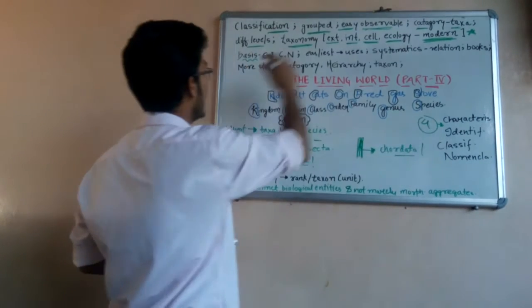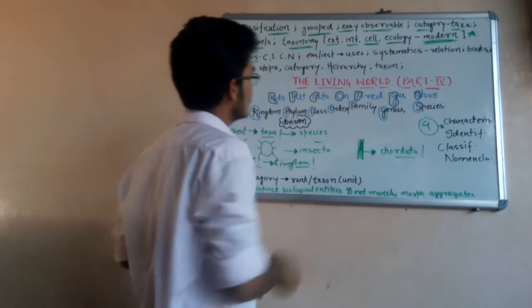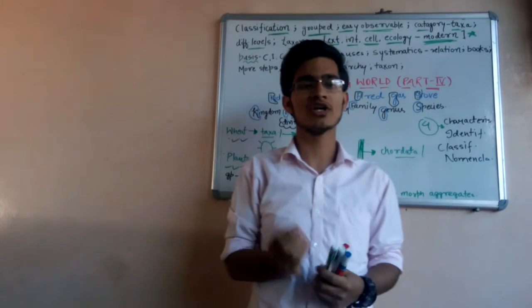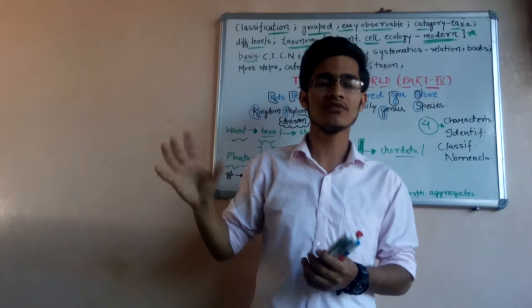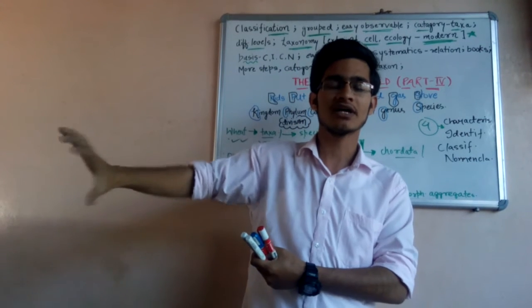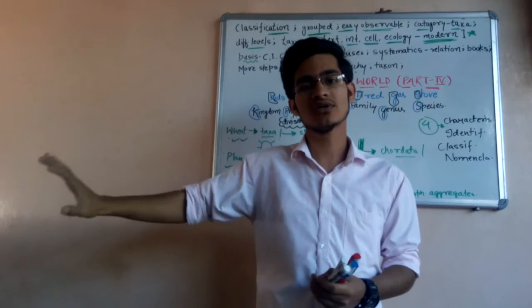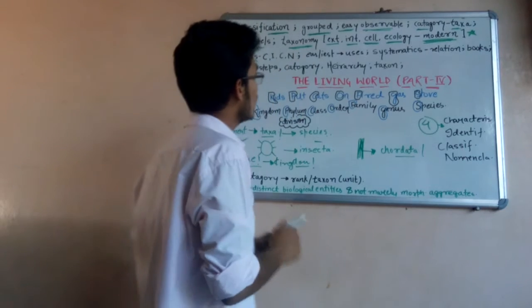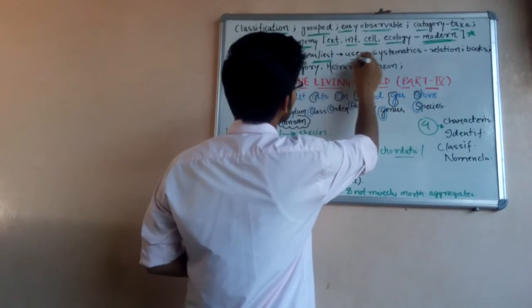The earliest classification will be based on their uses. For example, if we are using a particular organism for fodder, all the organisms used in fodder are placed in one convenient category. If some species is used for wood, it is placed in another category. Some for fibers, some for pulses. The earliest classification is based on the uses of different kinds of organisms.